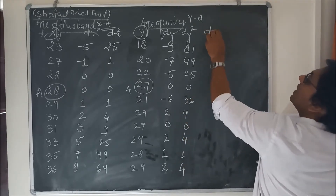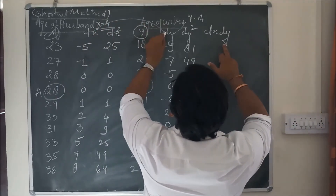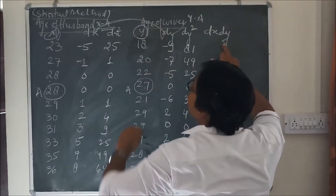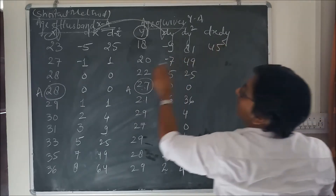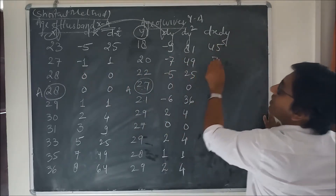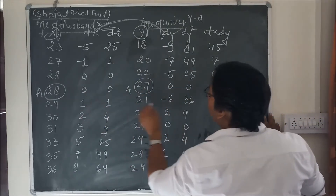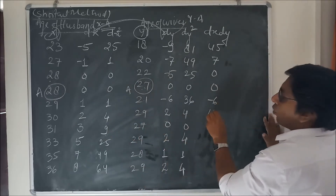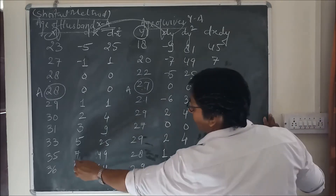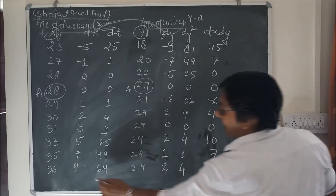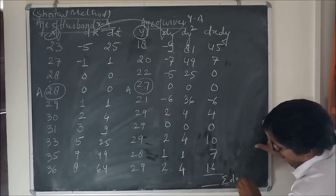Now we calculate dx·dy by multiplying dx into dy: minus 5 into minus 9 = 45; minus 1 into minus 7 = 7; 0 into minus 5 = 0; 0 into 0 = 0; 1 into minus 6 = minus 6; 2 into 2 = 4; 3 into 0 = 0; 5 into 2 = 10; 7 into 1 = 7; 8 into 2 = 16. So this gives us sigma dx·dy.